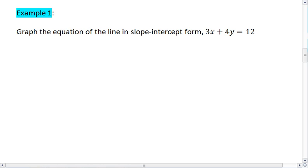Example 1, let's graph the equation of the line and put it in slope-intercept form for 3x plus 4y equals 12. So we are given 3x plus 4y equals 12. To put it in slope-intercept form, solve for y.